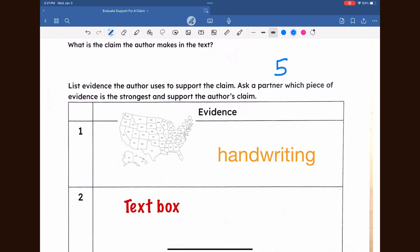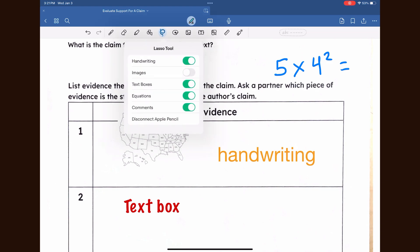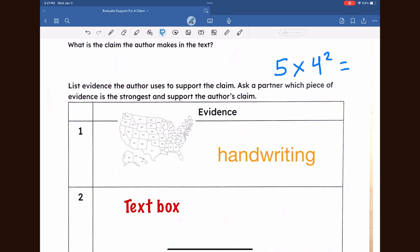Select the lasso tool, then circle the text. Tap on the text, click convert, then select text or math. You can also use the lasso tool to take screenshots within GoodNotes.